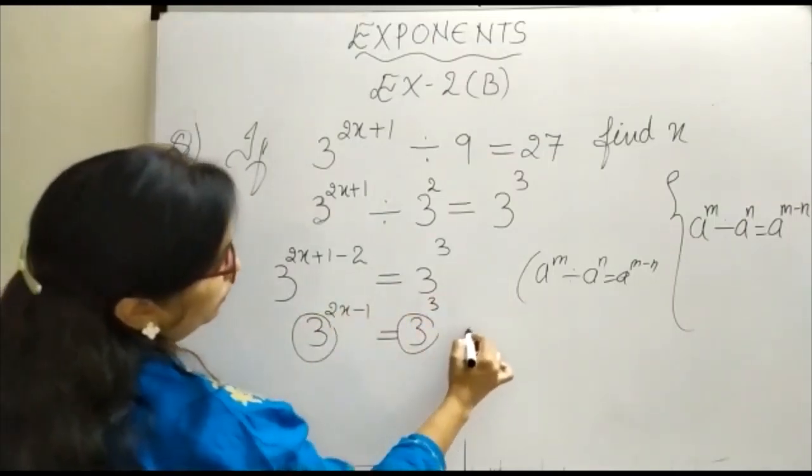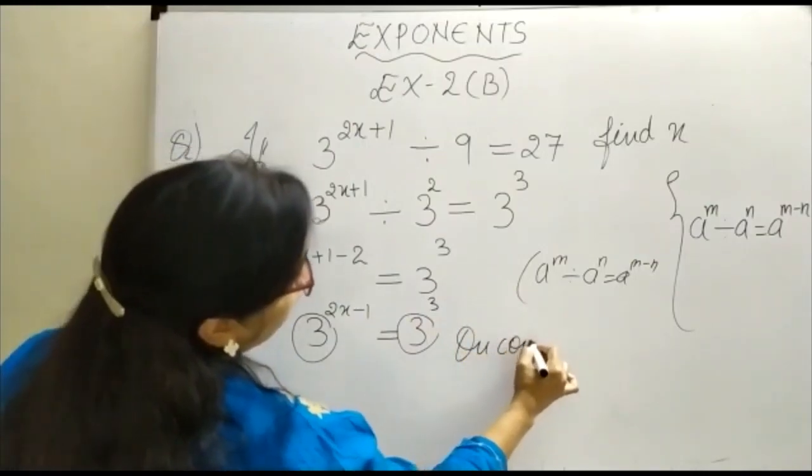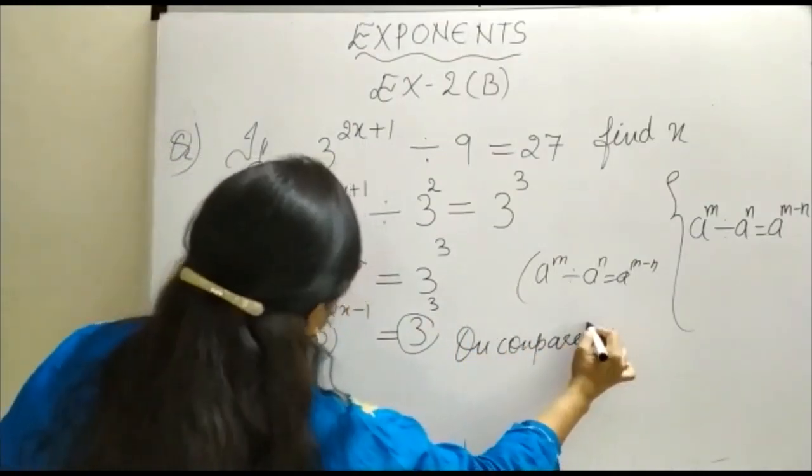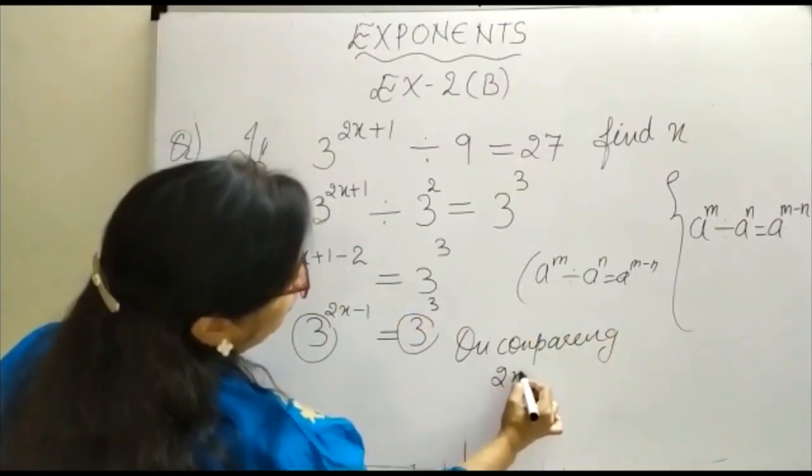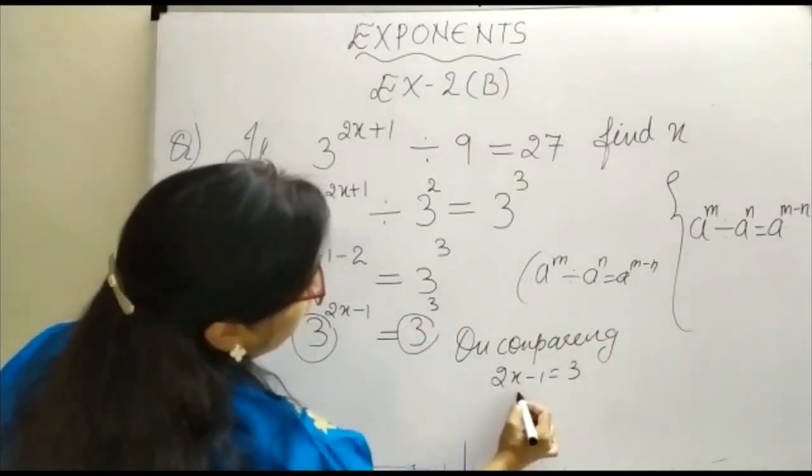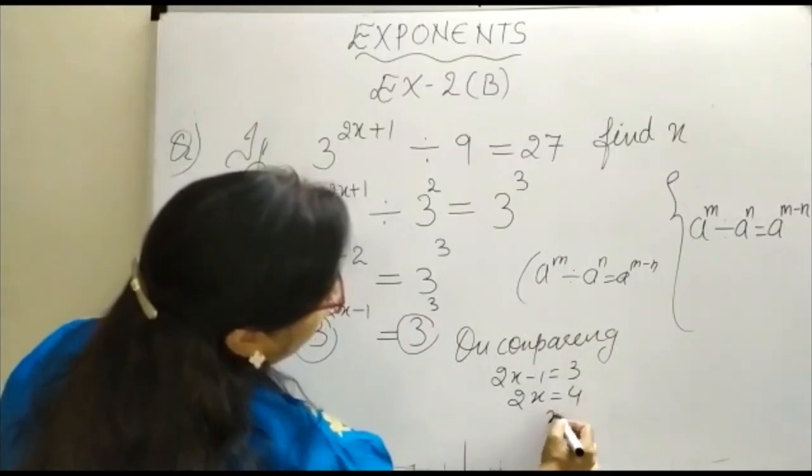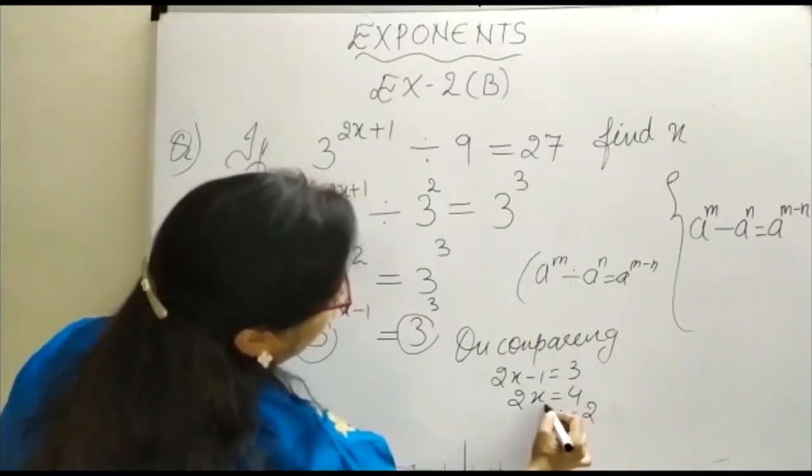So on comparing, we get 2x minus 1 is equal to 3, which means 2x is equal to 4, and x is equal to 2.